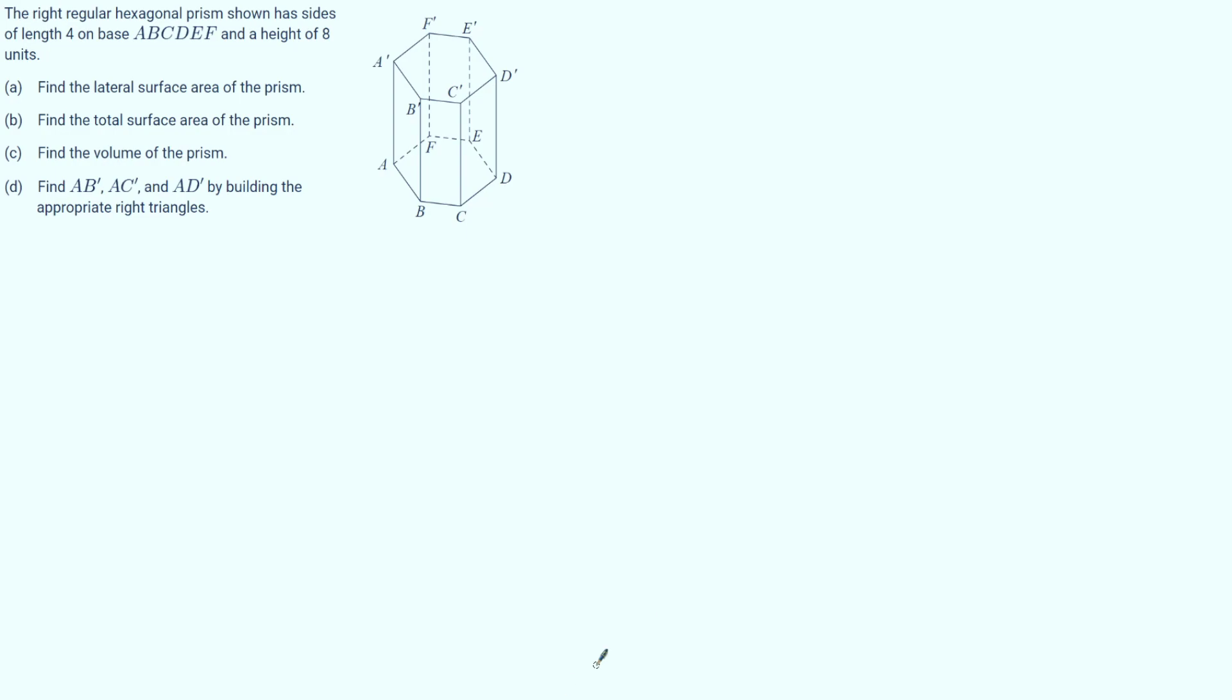Hello again. So we have a new type of problem where we have a right regular hexagonal prism with side lengths on the base that equal 4 and a height of 8. So it first wants us to find the lateral surface area of our prism.